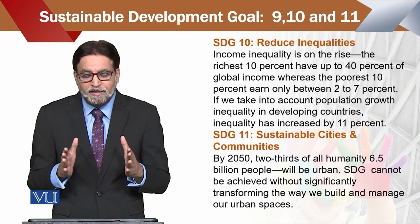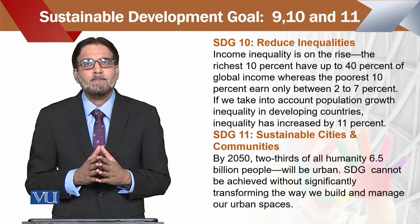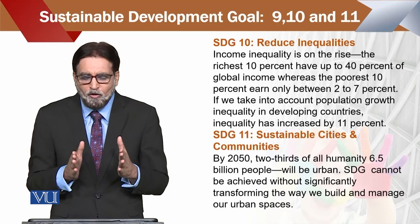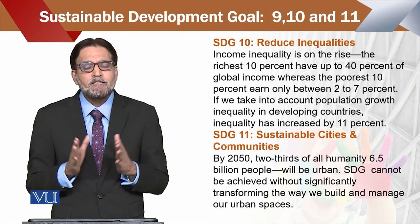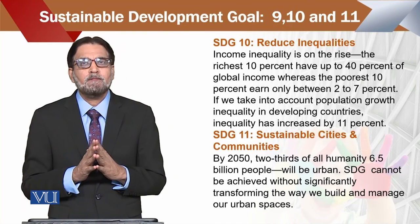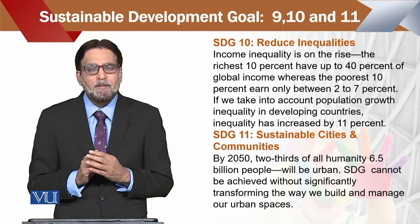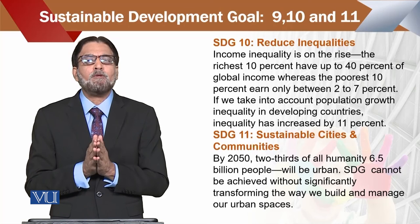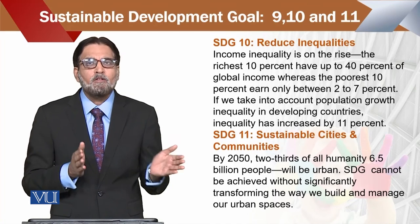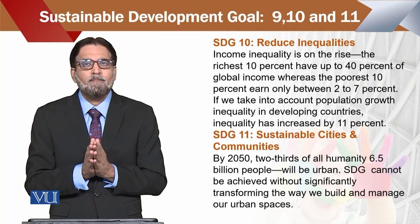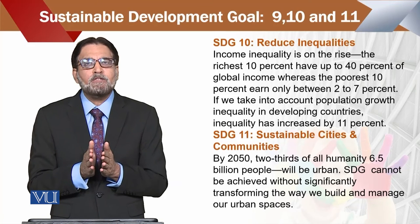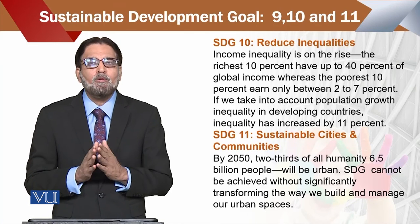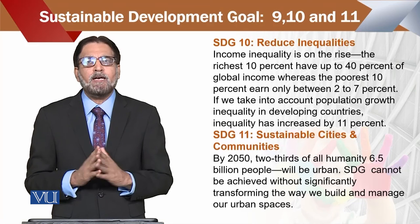اب SDG 11 کے اندر ہے Sustainable Cities and Communities۔ 2050 کا target بنایا گیا ہے اور وہ target کیا ہے کہ by 2050, two thirds of all humanity — یعنی 6.5 billion people — will be urban۔ اب یہاں پہ سوال یہ ہے کہ ہم urbanization کیوں چاہتے ہیں؟ اس کی وجہ یہ ہے کہ urban area کے اندر facilities بہت زیادہ ہوتی ہیں، جبکہ rural areas کے لوگ ان facilities سے زیادہ مستفید نہیں ہوتے۔